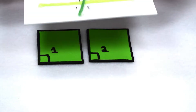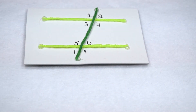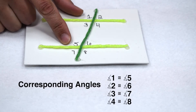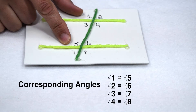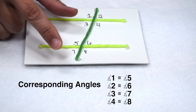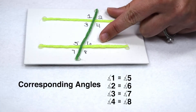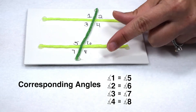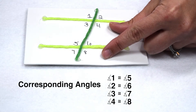When we have two parallel lines cut by a transversal, several sets of corresponding angles are formed. Angle 1 and angle 5 would be corresponding because they're both in the top left corner. Angle 3 and angle 7 because they're both in the bottom left. On the other side, angle 2 and angle 6 are corresponding angles because they're both in the top right. And angle 4 and angle 8 are corresponding because they're both in the bottom right.